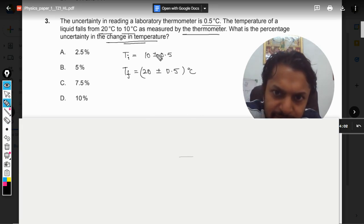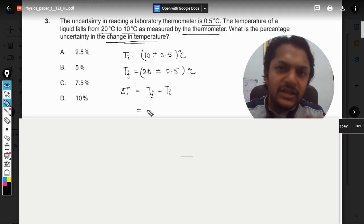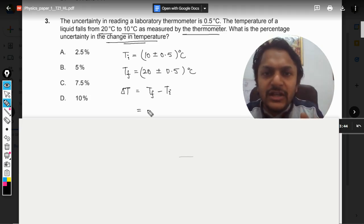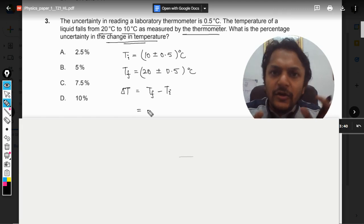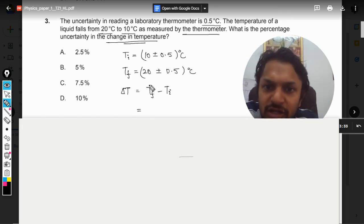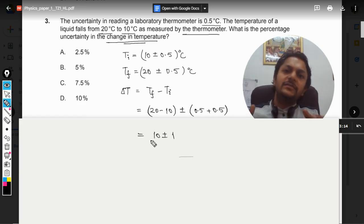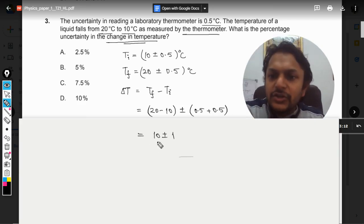So this is T_i and T_f. What we want is the change in temperature, which is T_f minus T_i. So when we subtract, we have learned in our chapter on the topic of propagation of errors that all the errors will be added whether the physical quantities are getting subtracted or added. The errors will always be added. So here it will come out to be 20 minus 10 plus minus the error will be added: 0.5 plus 0.5, so it will become 10 plus minus 1. So this is our new reading that which we get out of the calculation.